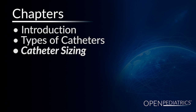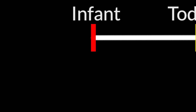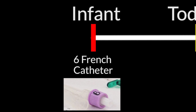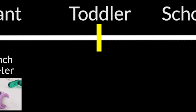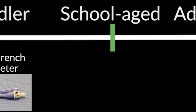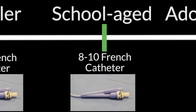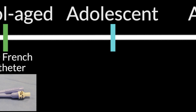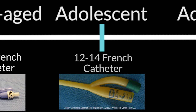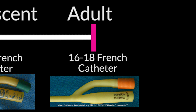Catheter sizing. Catheter sizes are chosen based on the age of the patient. An infant may use a 6 French Foley catheter. Toddler and preschool children will use an 8 French to 10 French size catheter. School-age children can use anywhere from an 8 French to a 10 French catheter. Adolescents can use anywhere from a 12 to 14 French catheter, or up to a 16 to 18 French catheter.